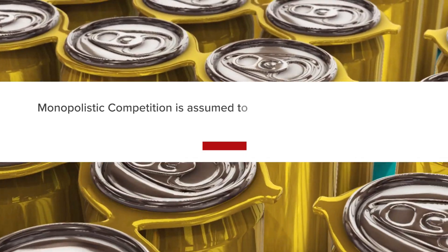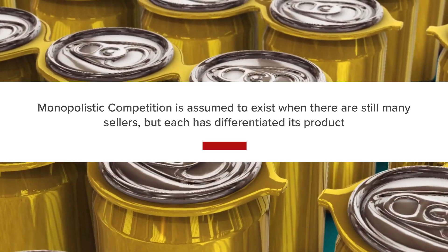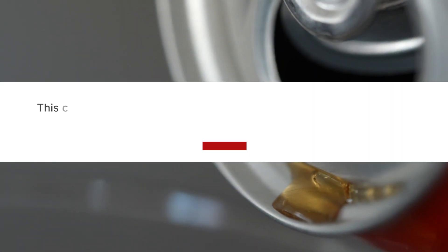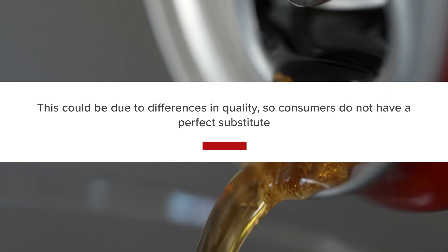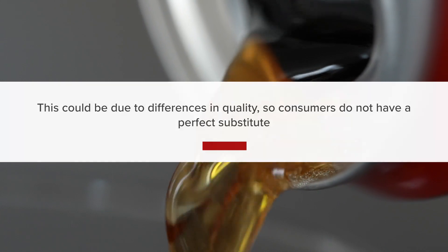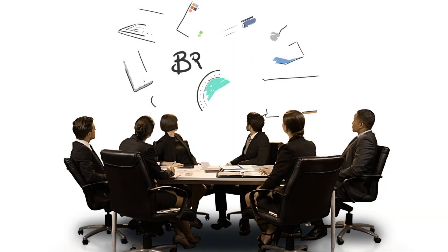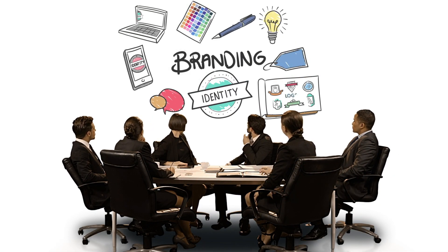Monopolistic competition is assumed to exist when there are still many sellers but each has differentiated its product. This could be due to differences in quality, and so consumers do not have a perfect substitute. In this case, imagine how two cans of soft drinks are different although quite similar to one another. Therefore, under monopolistic competition, due to branding,